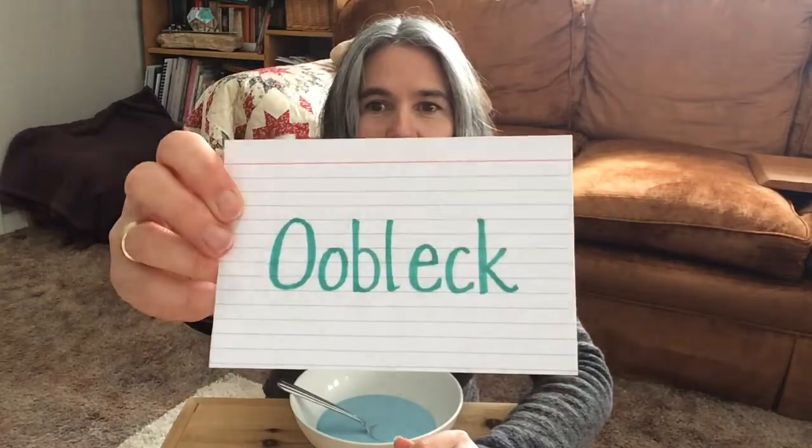It's called... OOBLEK. I didn't make that up. Dr. Seuss made that up. He wrote a book about a very bored kid — imagine a kid being bored — who decided to make it rain green goo from the sky. And he called it OOBLEK. So we're going to make some of this OOBLEK. It is a non-Newtonian fluid, but it's easy to make. You can make it in your kitchen.